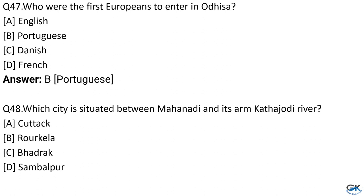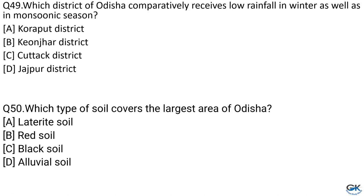Question No. 48: Which city is situated between Mahanadi and its arm Kathajodi river? Option A: Cuttack. Option B: Rourkela. Option C: Bhadrak. Option D: Sambalpur. The answer is Option A, Cuttack. Question No. 49: Which district of Odisha comparatively receives low rainfall in both winter and monsoon season? Option A: Korapur district. Option B: Keonjhar. Option C: Cuttack. Option D: Jajpur. The answer is Option A, Korapur district.